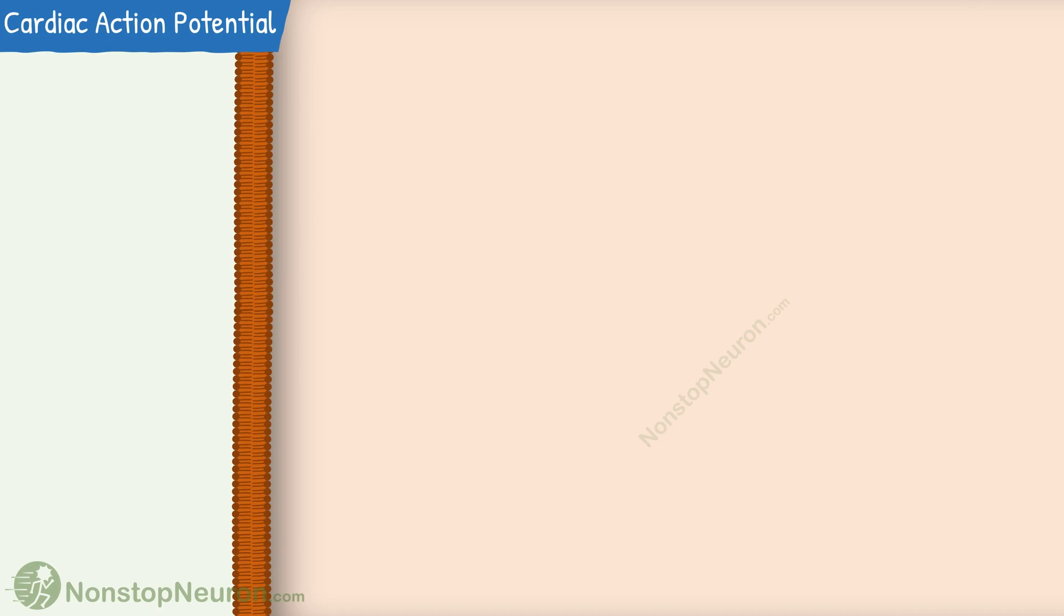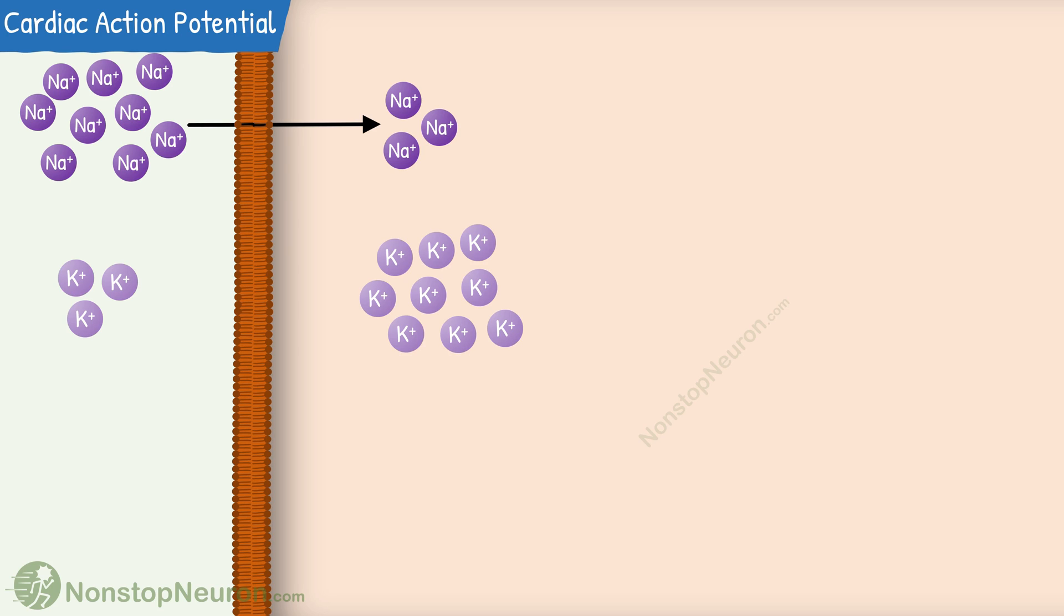This is a ventricular muscle cell. The ionic composition around here is similar to all other cells in the body. The sodium concentration is higher outside the cell, so it tends to diffuse in. Potassium concentration is high inside the cell, so it tends to diffuse out. Finally, calcium concentration is also higher outside, so it tends to diffuse in.